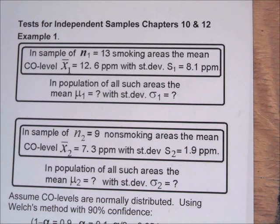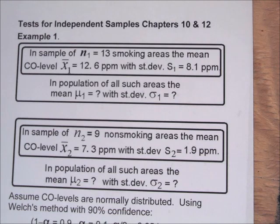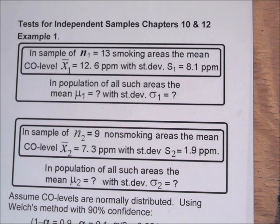The mean carbon monoxide level X1-bar is 4.6 parts per million with a standard deviation S1 of 8.1 parts per million. This is taken from the population of all such areas where the mean mu1 is unknown and the standard deviation sigma1 is also unknown.